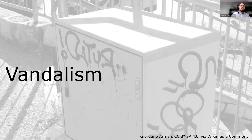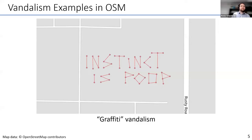Next, let's talk about vandalism. Everyone knows vandalism in the real world, but it might not be obvious what vandalism means in OpenStreetMap. Here in the picture you can see graffiti, and it turns out we also have graffiti vandalism in OpenStreetMap. People use geometric shapes to draw text on the map, and of course this is not accurate information and sometimes it's also inciting.